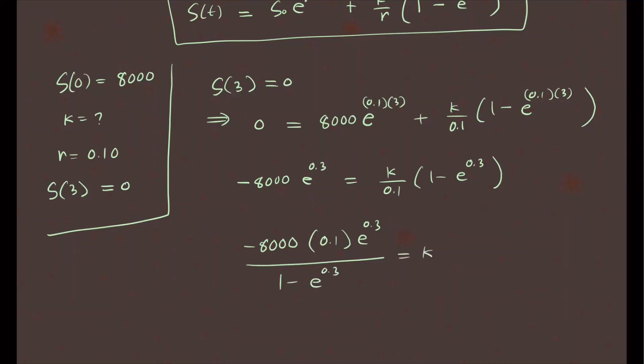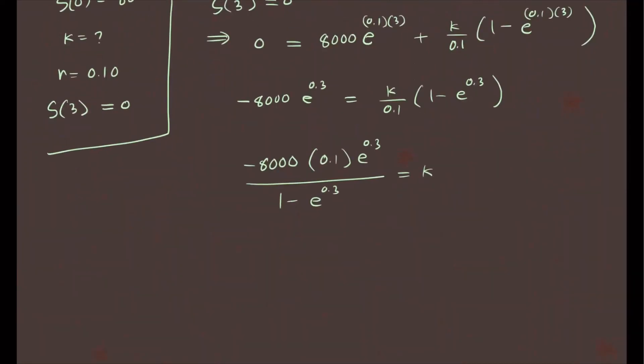Now if you're not allowed to use a calculator, of course this is an acceptable answer. But if you do punch this in your calculator, you will get that K is going to be about $3,086.64 per year. So this is how much the person will have to pay for three years so that the loan is paid off after three years. So that's the first part.